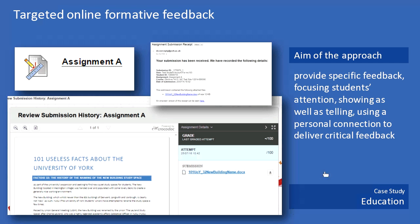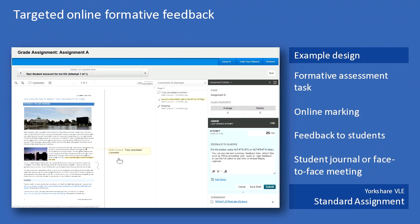This case study comes from education, where students are submitting a piece of written work. This uses the standard assignment submission tool — not the anonymous assignment submission tool, but the formative one where students can submit Word documents or PDFs through the VLE. The marker can then mark directly within the VLE on that work, and the student can collect it and see annotations. Forms of annotations include post-it notes, squiggles, highlights, and summary comments. You can also use rubrics — marking matrix type feedback as well.